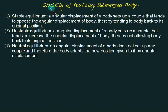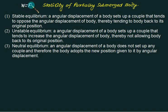Now we have done some problems on this. We will go for the stability of a partially submerged body. We have to study three types of equilibrium: stable equilibrium, unstable equilibrium, and neutral equilibrium.